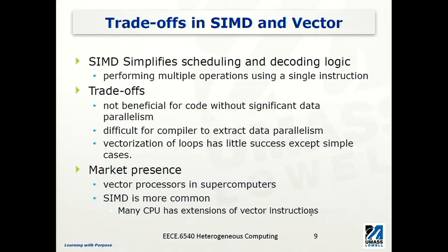For example, loops are often a challenging case where the compiler has a hard time extracting data parallelism. For loop iterations, oftentimes the next iteration depends on the previous iteration. But in some cases, it's possible to extract some parallelism within one loop iteration. SIMD is more common than vector instructions, where vector processors are more often in the supercomputing domain. And SIMD is more common, as many CPUs have extensions of vector instructions.